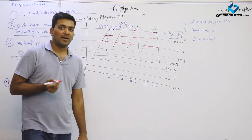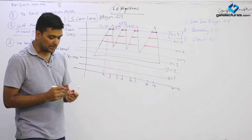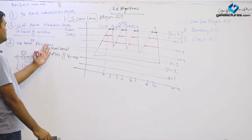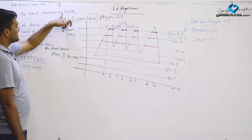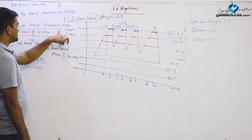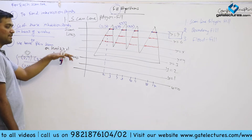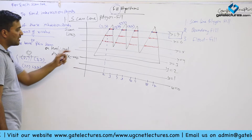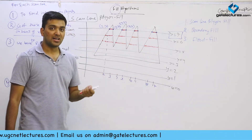Now let us see where a problem could occur with certain types of polygons. Remember the order: first draw scan lines to find intersection points with the edges of the polygon; sort those intersection points on the basis of x values; then pair them into groups of two points; and then fill or color whatever pixels are within each pair.